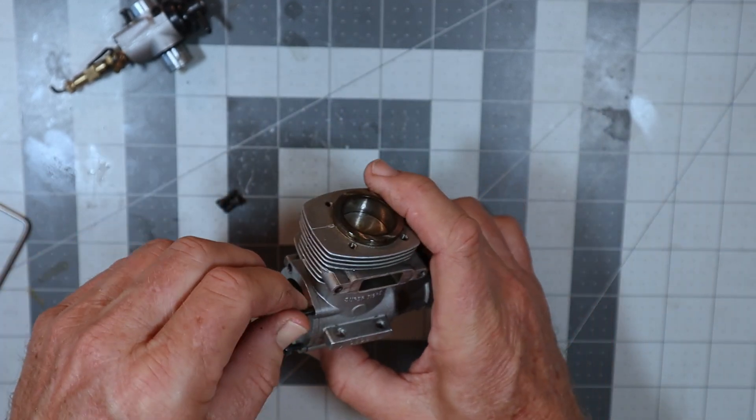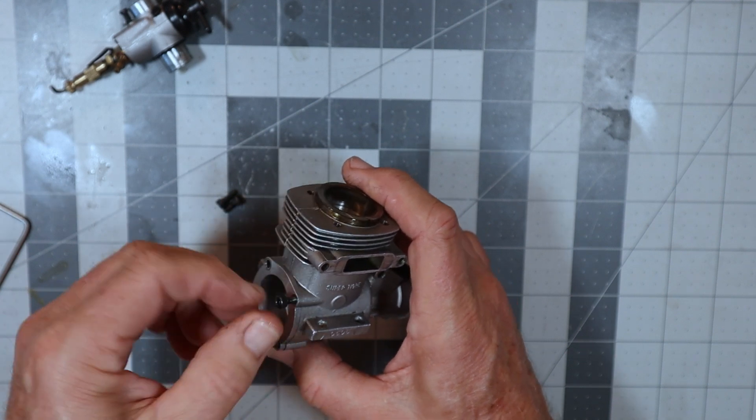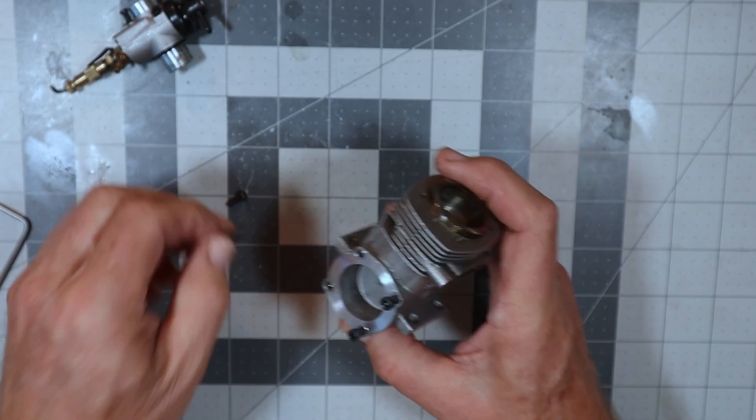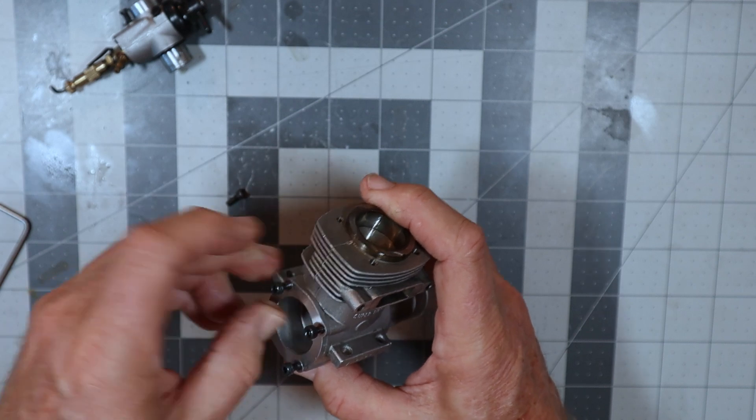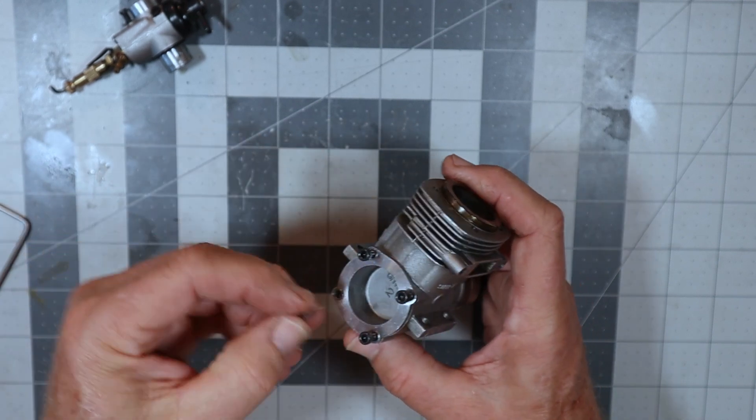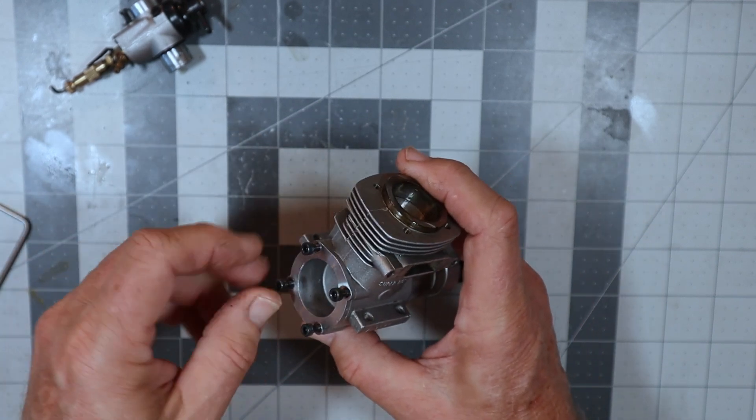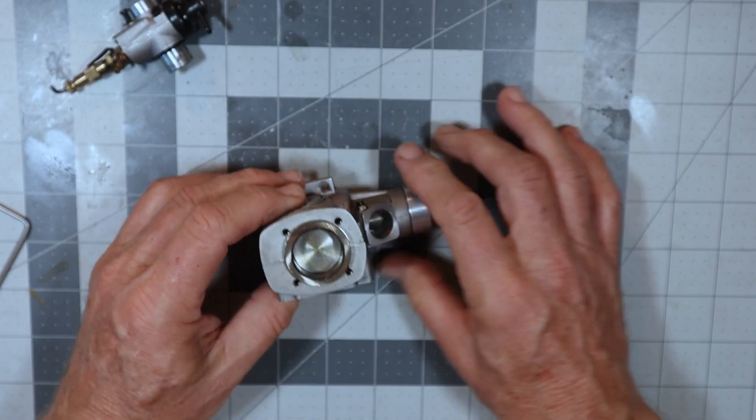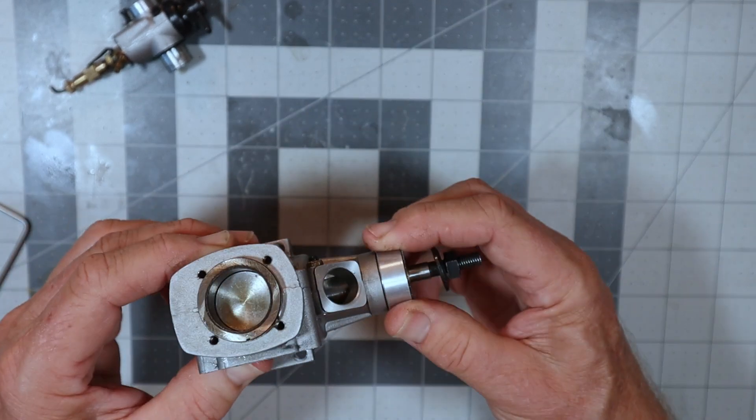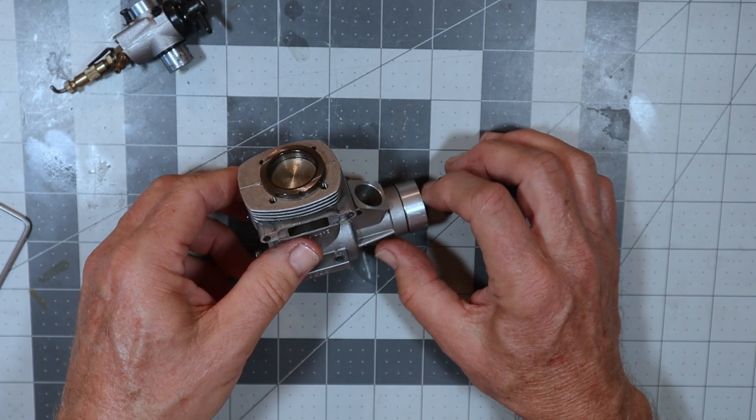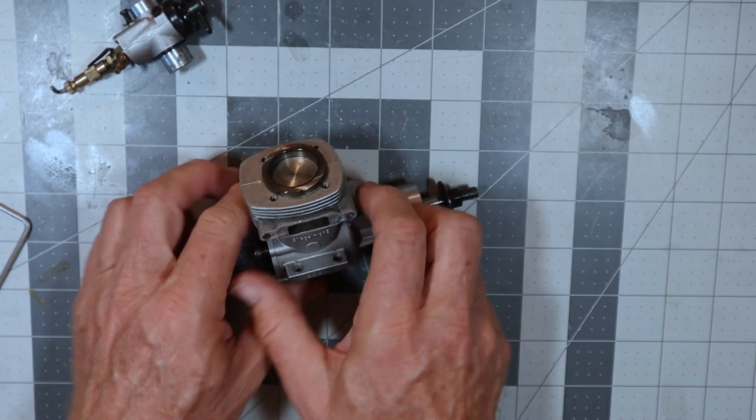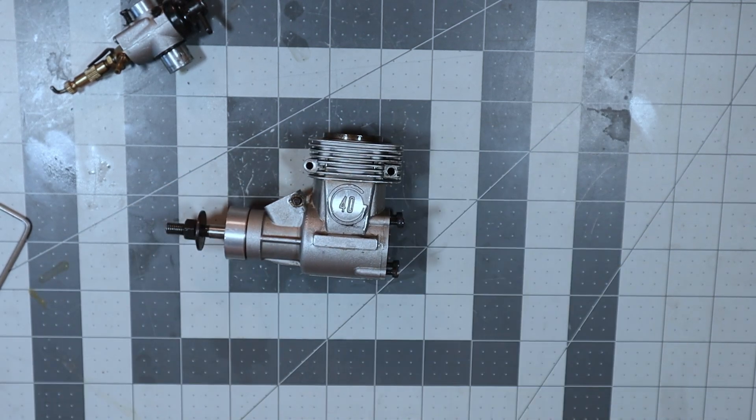But apparently I'm not gonna have to worry about that, maybe ever, because this engine is in such awesome shape I just can't imagine ever needing to replace bearings in it with the sort of runs and stuff that I do. So anyway, there's your look inside of this Super Tiger G40, Chinese made G40 engine.